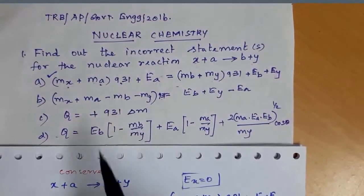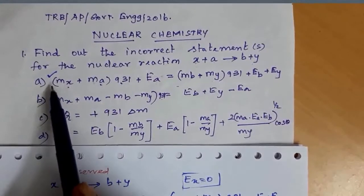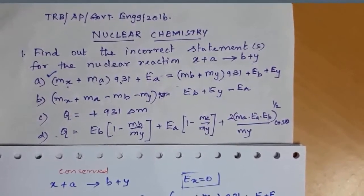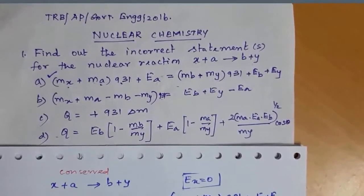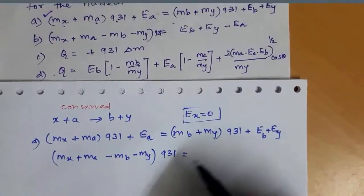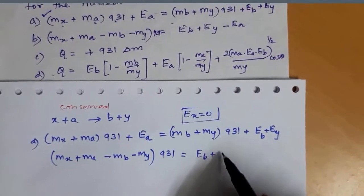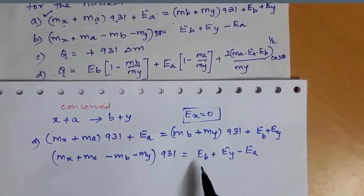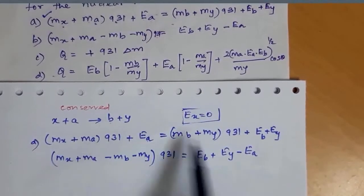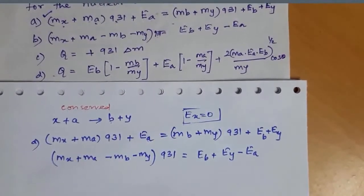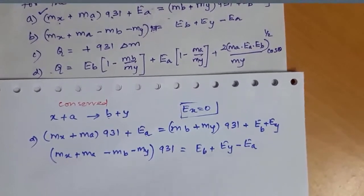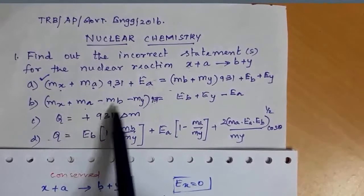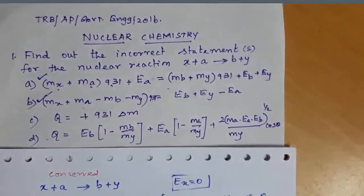Option B is a rearrangement of option A: (MX plus MA minus MB minus MY) into 931 equals EB plus EY minus EA. Here, B is the ejectile nucleus and Y is the product nucleus. Option B is also a correct statement.